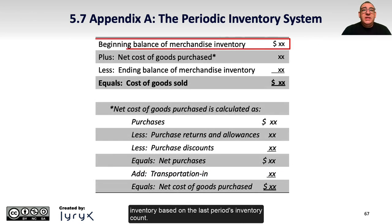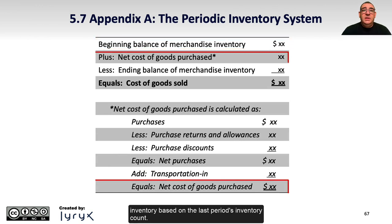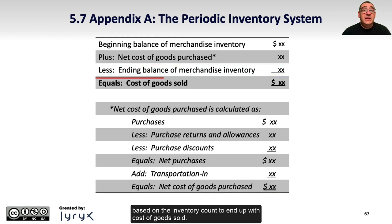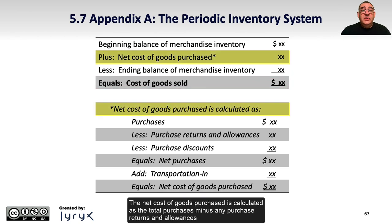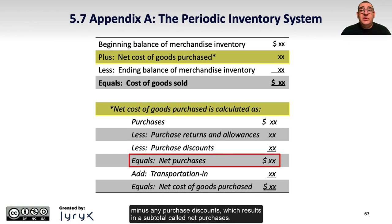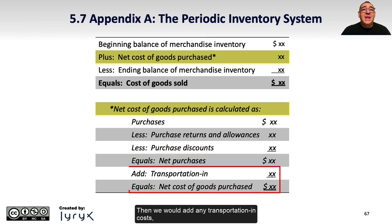We start with the beginning merchandise inventory based on the last period's inventory count, then add the net cost of goods purchased, and deduct the ending merchandise inventory balance based on the inventory count to arrive at cost of goods sold. The net cost of goods purchased is calculated as total purchases minus any purchase returns and allowances, minus any purchase discounts — resulting in the subtotal called net purchases — then adding any transportation in costs to arrive at the net cost of goods purchased.